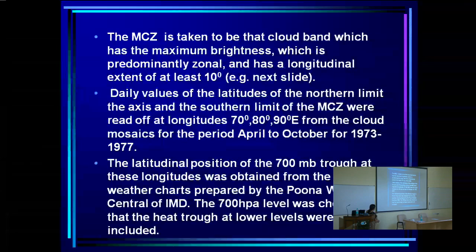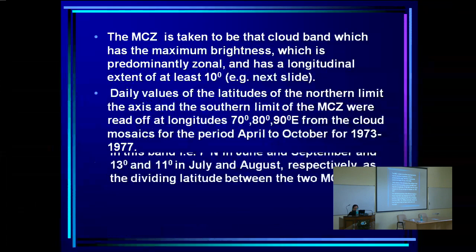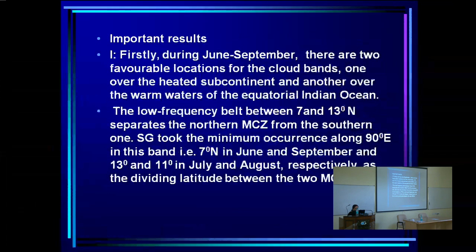Daily latitudes of the northern and southern limits and axis of the MCZ were recorded at these longitudes from cloud mosaics for the period April to October 1973–1977. The latitudinal position of the 700 hPa trough at these longitudes was obtained from daily weather charts prepared by the Poona Weather Centre. The 700 hPa level was chosen so that the heat trough at lower levels was excluded.